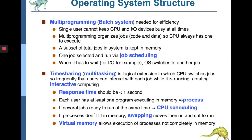The goal is to give the user the best response time — something in milliseconds or less than a second. Each user has one program to execute in memory, called a process. If several jobs are ready to run at the same time, the operating system performs CPU scheduling. A scheduler assigns priorities and determines which job is executed next.